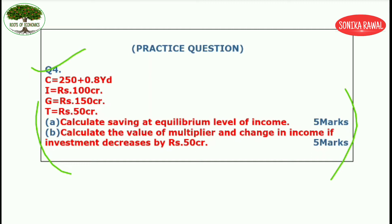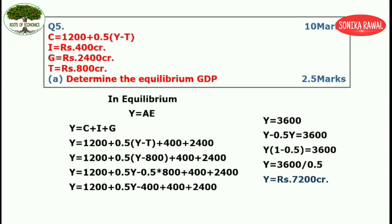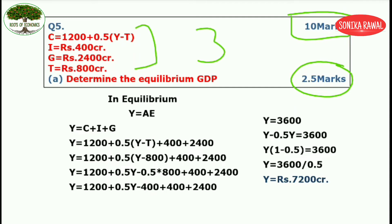Moving further to question number 5. Question number 5 has 4 parts and each part is 2.5 marks, making it a total of 10 marks. We will do one part per slide. The data given is again a three sector economy model — C, I, G and T are given. Part A asks you to determine the equilibrium GDP. In equilibrium, Y is equal to AE, and AE is equal to C plus I plus G.